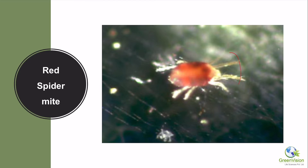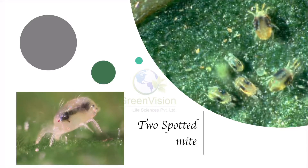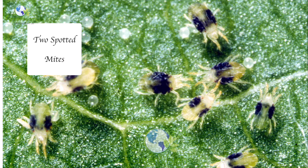Which insects does it control? This is the red spider mite — a dangerous pest in agriculture. It can feed on any crop, sucks sap, causes chlorosis, and causes heavy damage. Apart from that, there is another species called the two-spotted mite, which mainly affects roses and floriculture crops. MM-Pact controls the eggs as well as the nymphs and adults of spider mites.